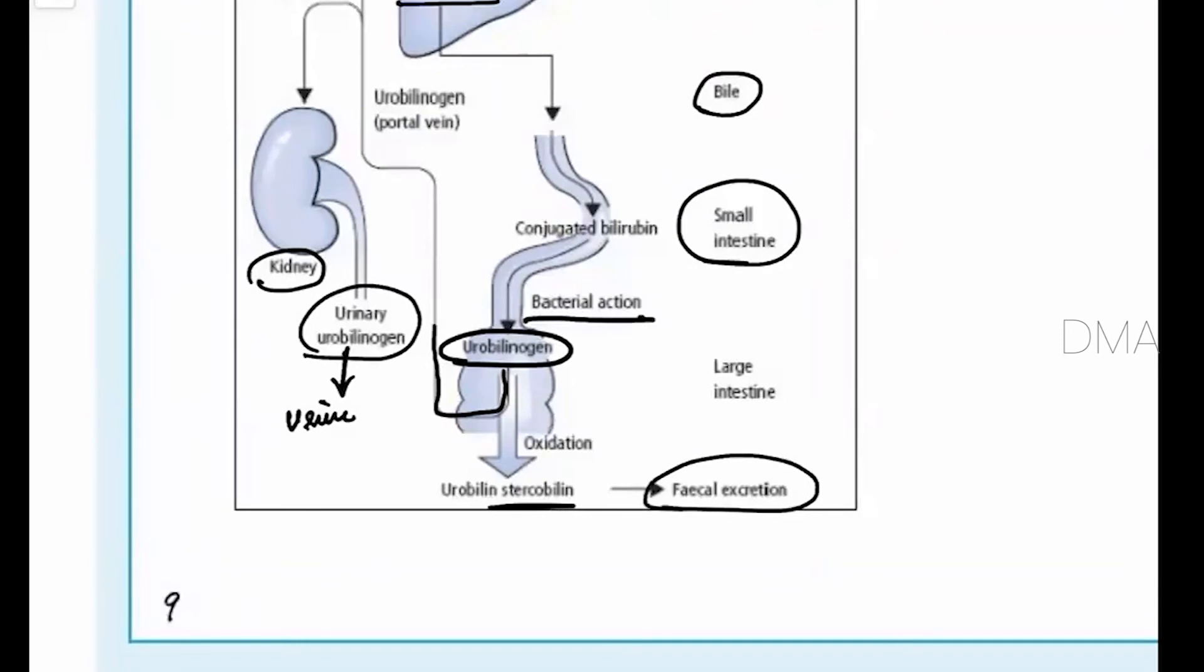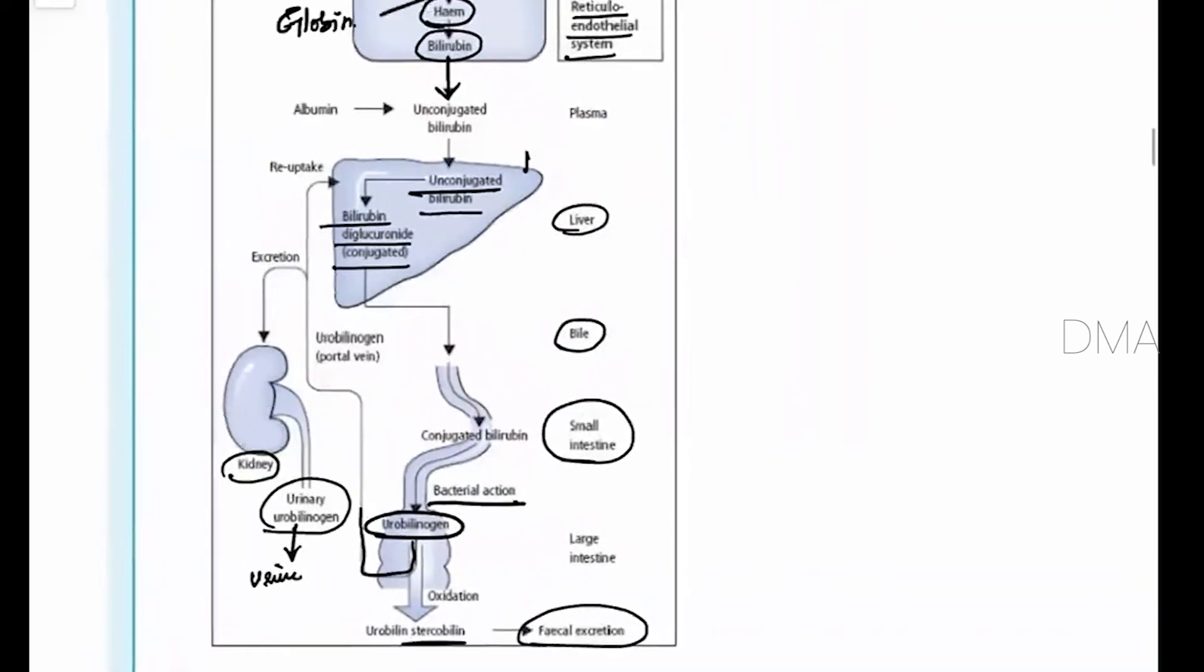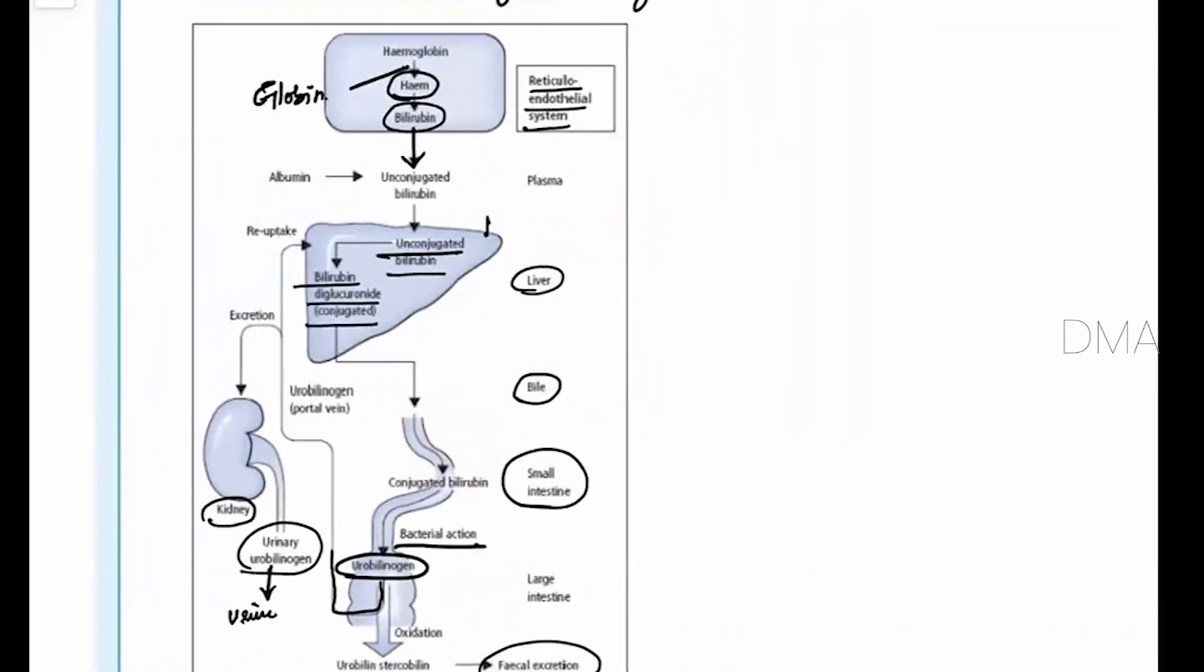which gives yellow color to the fecal material. And this is how the hemoglobin is undergoing the destruction mechanisms. And now the iron which is present in the heme.